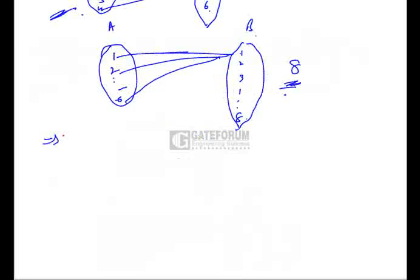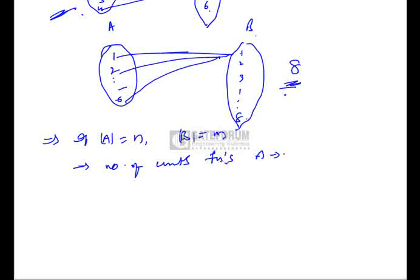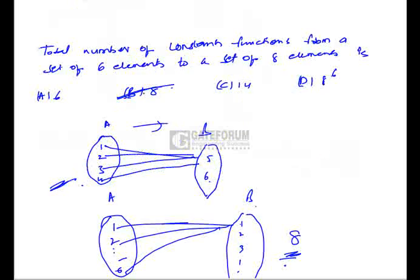In short, if A contains n elements and B contains m elements, then the number of constant functions from A to B is equal to the number of elements in B. Here set B contains eight elements, so the number of constant functions is eight. The correct option is option B.